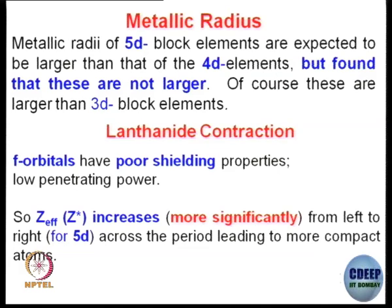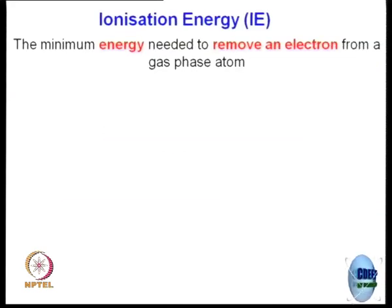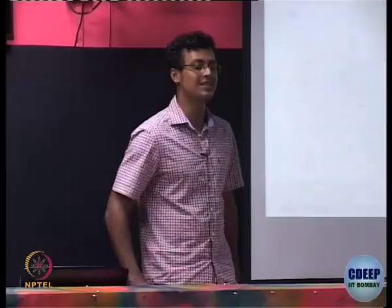F orbitals have poor shielding properties and low penetrating power. So Z* (effective nuclear charge) increases more significantly from left to right across the 5D period, leading to more compact atoms. This phenomenon is called lanthanide contraction. What about ionization energy — what have we seen so far?